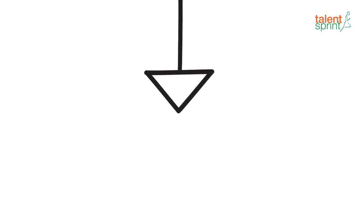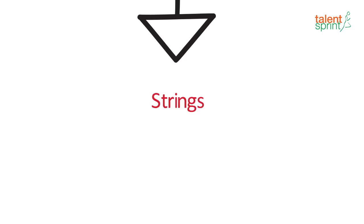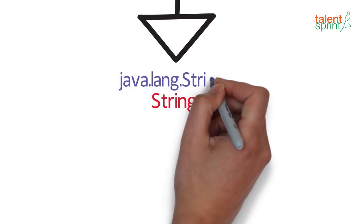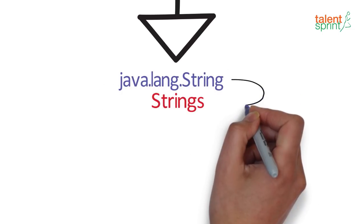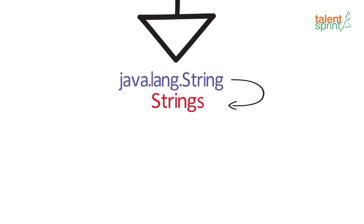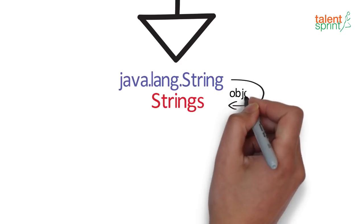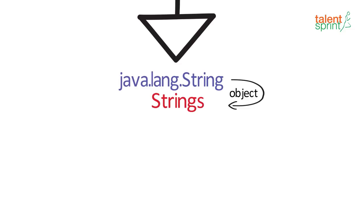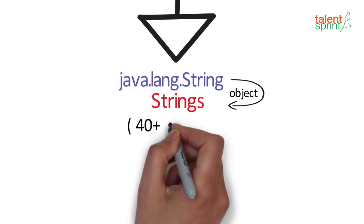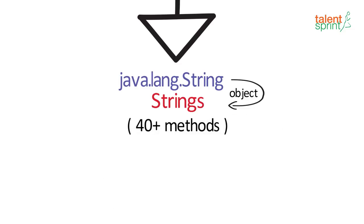Strings in Java are objects of the predefined string class java.lang.string. Every time you create a string variable, you are creating an object of this class. The string class provides many methods to work on these strings.